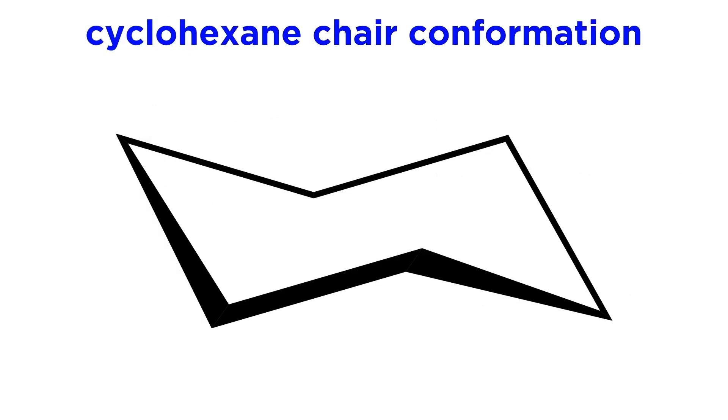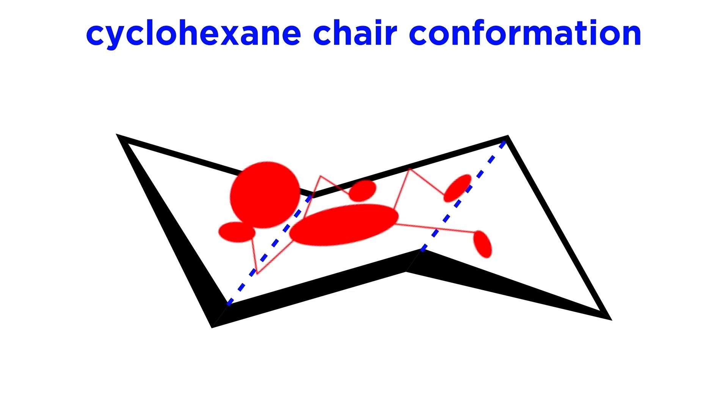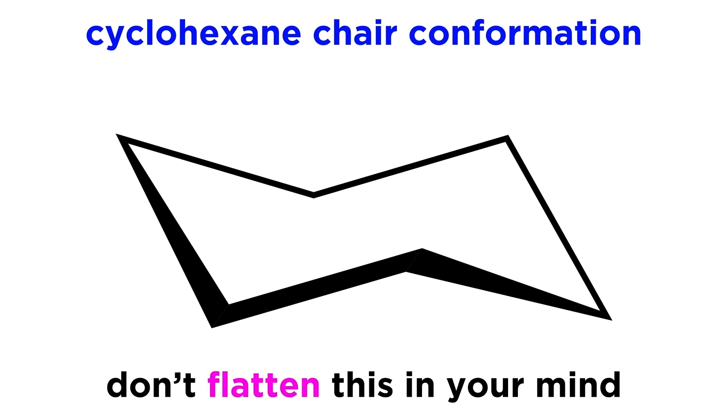Putting all this together, we can see why we call this the chair conformation, because it quite literally resembles a lawn chair that one could lounge upon. Try to always see it this way, and don't allow your brain to flatten this out into a two-dimensional lightning bolt looking figure. We must perceive the implied depth at all times.